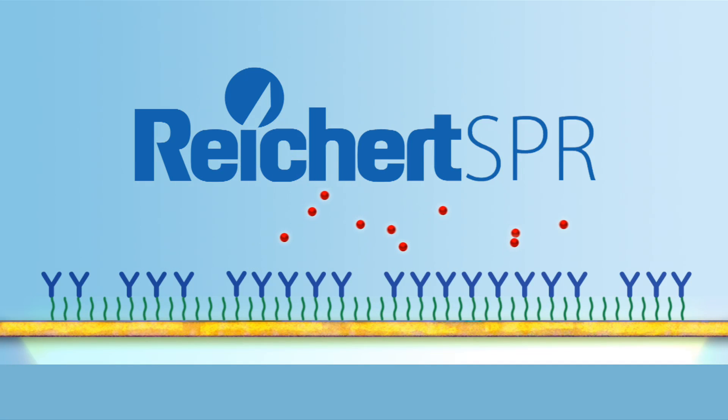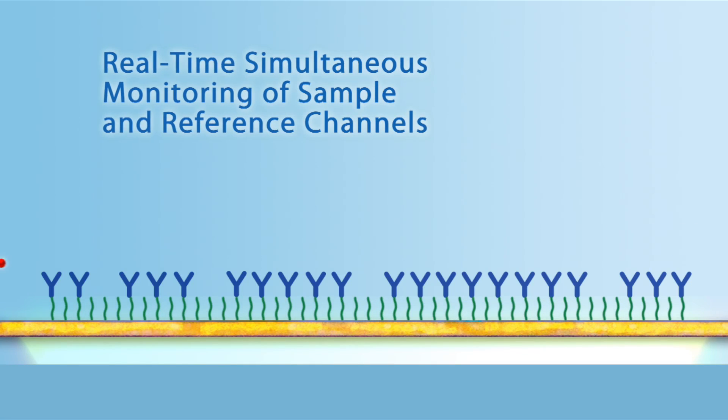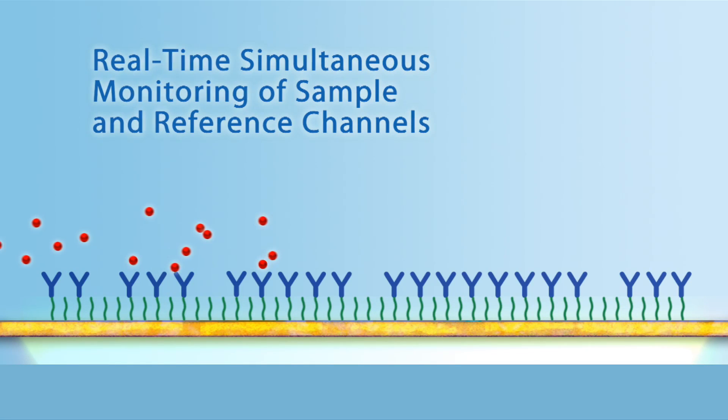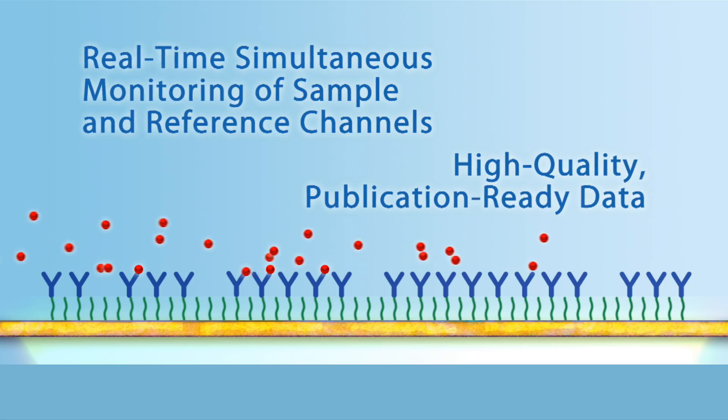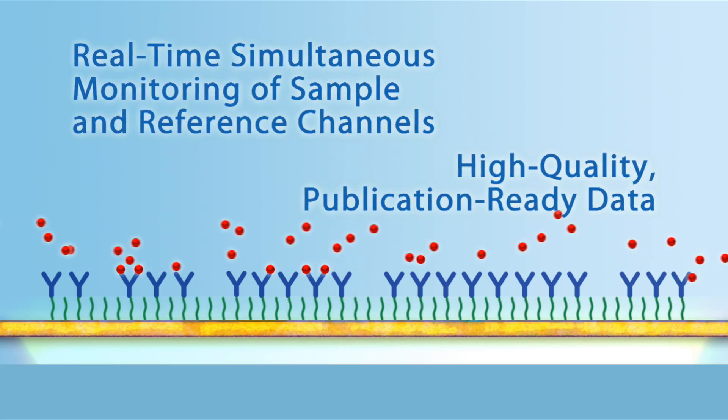Throughout the experiment, the Reichert dual-channel SPR instrument provides real-time, simultaneous monitoring of sample and reference channels, resulting in high-quality, publication-ready data.